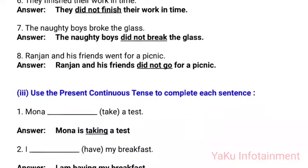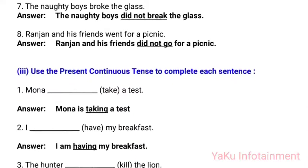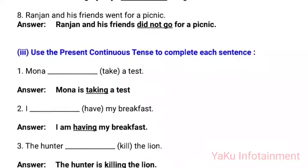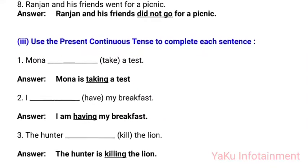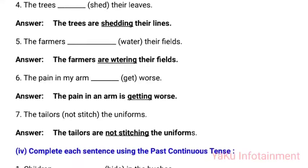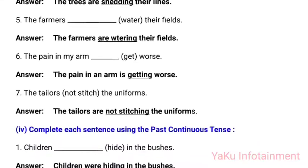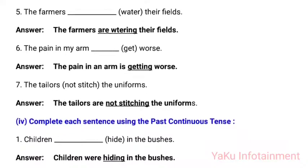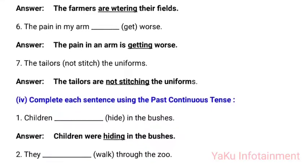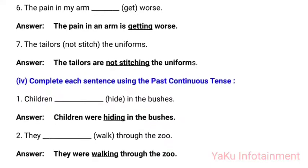Use the present continuous tense to complete each sentence: (1) Mona is taking a test. (2) I am having my breakfast. (3) The hunter is killing the lion. (4) The trees are shedding their leaves. (5) The farmers are watering their fields. (6) The pain in my arm is getting worse. (7) The tailors are not stitching the uniforms.